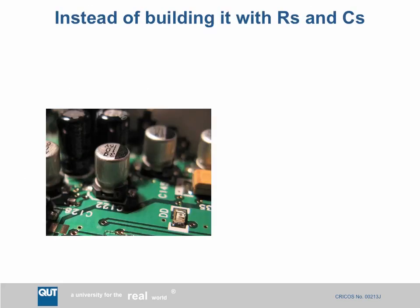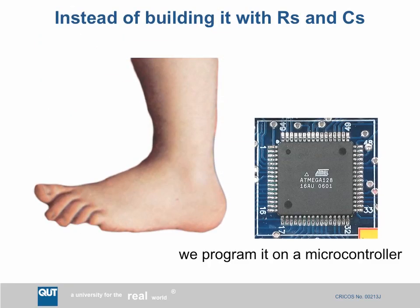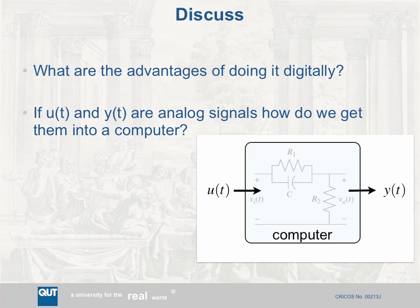Instead of building it with resistors and capacitors, why don't we simply program it on a microcontroller? You might say a microcontroller looks complicated and expensive while resistors and capacitors are cheap — why is that better? That's a good question. I'd like you to spend a few minutes discussing what you think the advantages are of doing it digitally. And if you do it digitally, and your signals U and Y are analog signals, how are you going to bridge the gap between analog signals and the digital world?